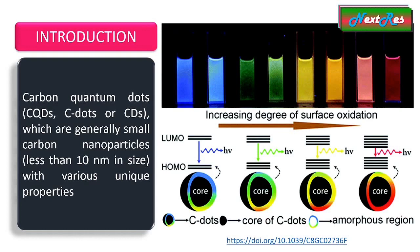Carbon quantum dots exhibit strong light absorption and high photoluminescence properties. They can absorb light in the ultraviolet and visible regions and emit fluorescence in the visible spectrum. The emission color can be tuned by controlling the size, surface chemistry, and doping of the carbon quantum dots.